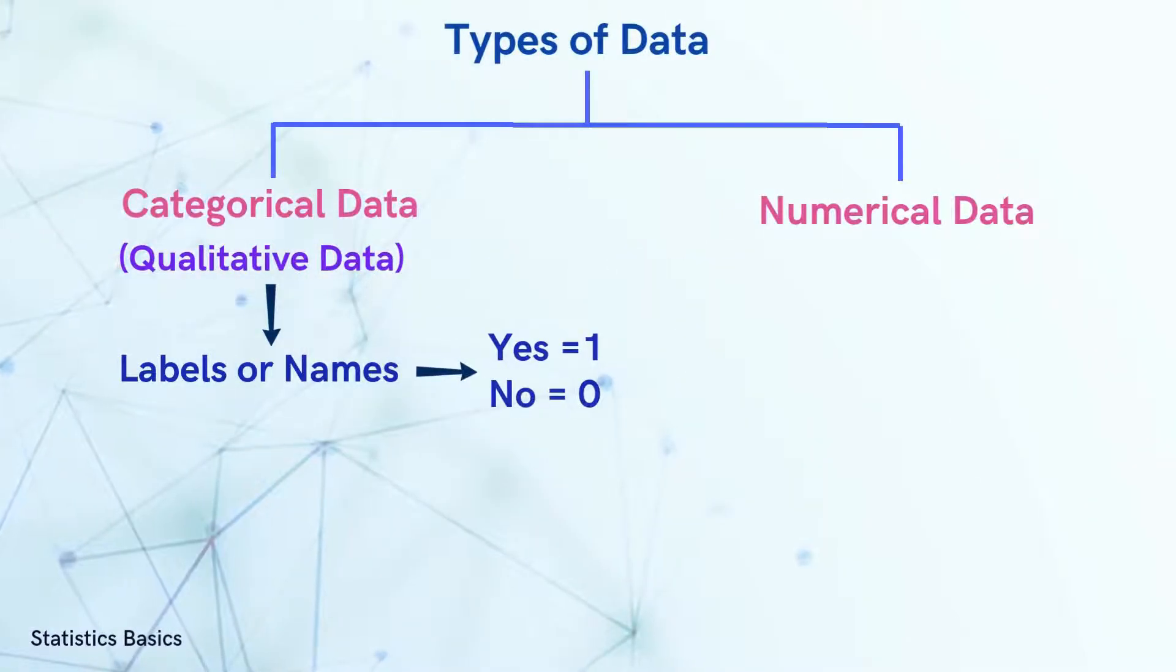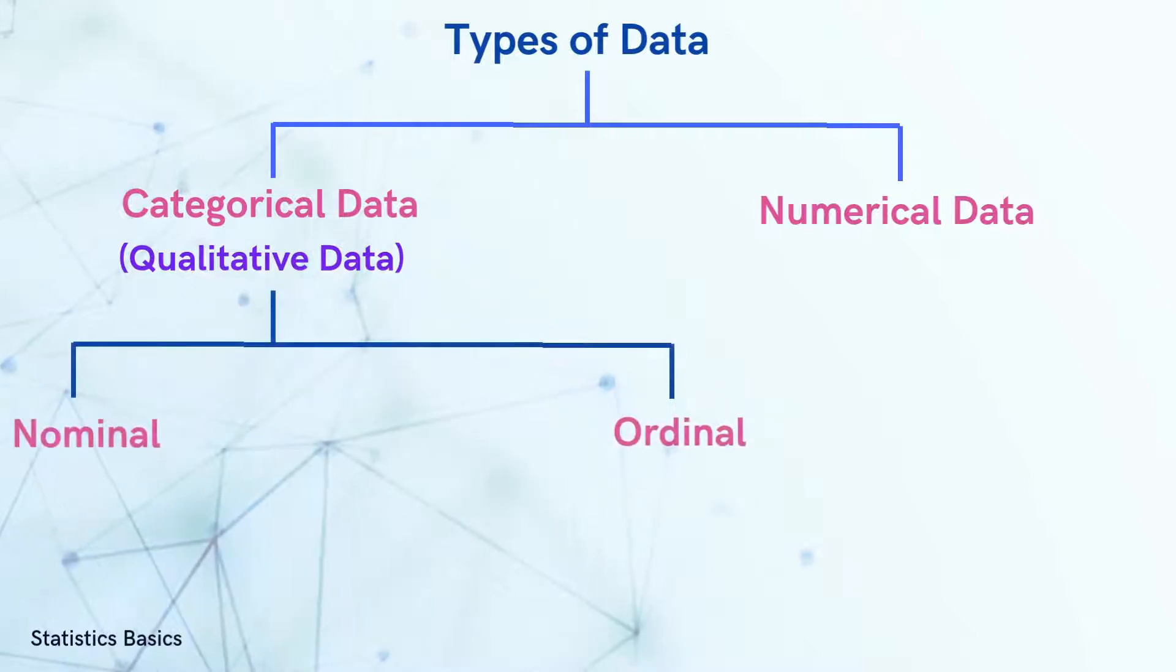These categories might sometimes be represented by numbers or codes for convenience. For instance, yes and no can be represented as 1 and 0, but they do not have any inherent numerical meaning. The categorical data is further divided into two types,